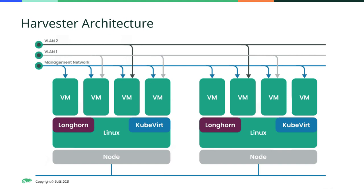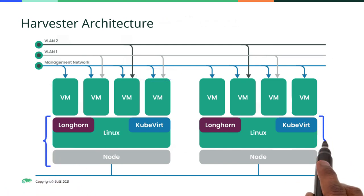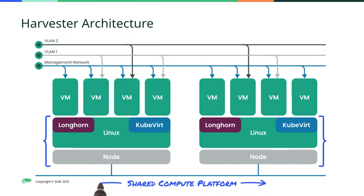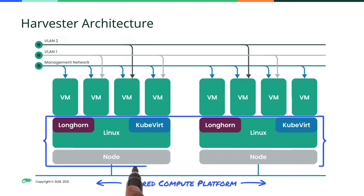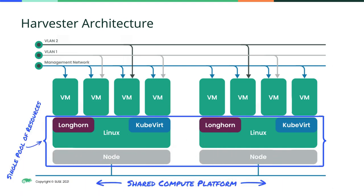Multiple VLANs can also be created. The virtual machine can connect to multiple networks at the same time, providing the ability to isolate the traffic across virtual machines. This networking is provided by Multus, as well as Harvester's network CNI plug-in, which allows a virtual machine to be connected to multiple network interfaces, which is very common within the virtual machine world. Harvester clusters multiple hosts together to provide a shared compute platform across all of them, allowing administrators to manage all of these servers as if they were one single pool of resources that can be allocated to virtual machines and, if running Kubernetes, to containers as well.